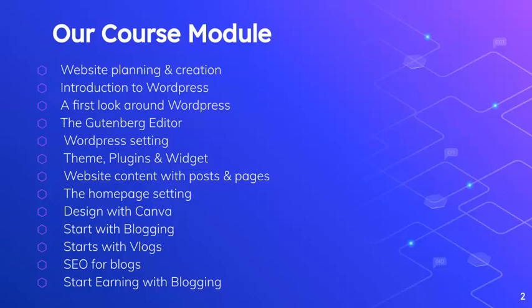Module 7: Website Content with Posts and Pages. WordPress offers two main ways to add content to a site: Posts and Pages. In this lecture, we'll look at how posts differ from pages, how to correctly use post categories and tags, and understand why these can cause problems with search engines if used incorrectly.